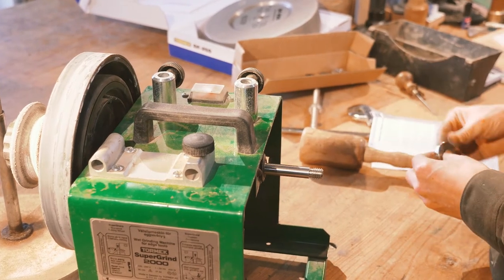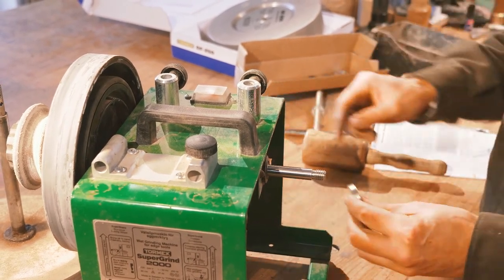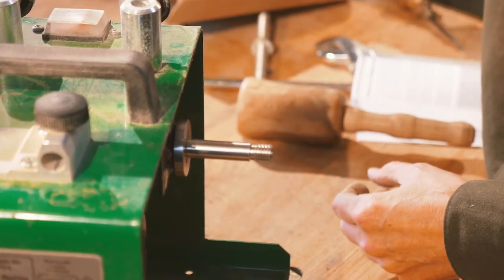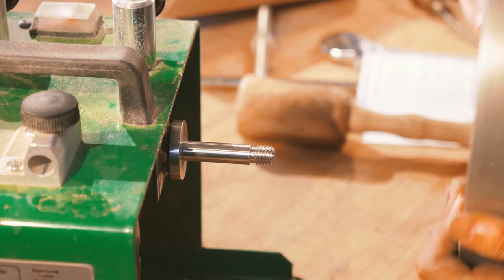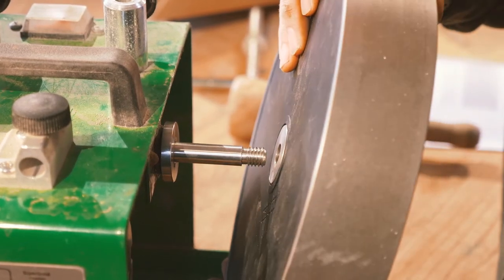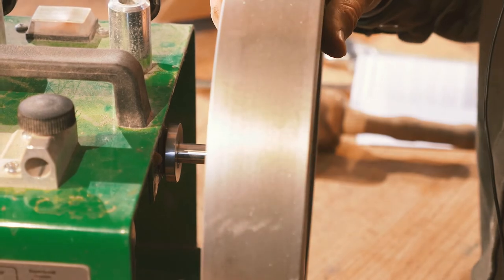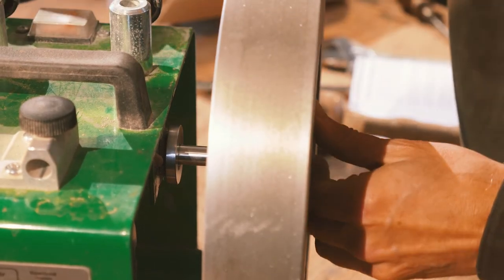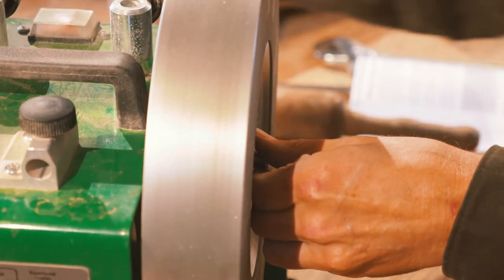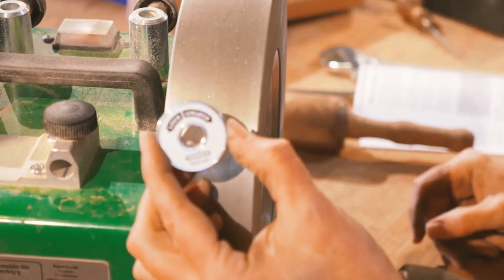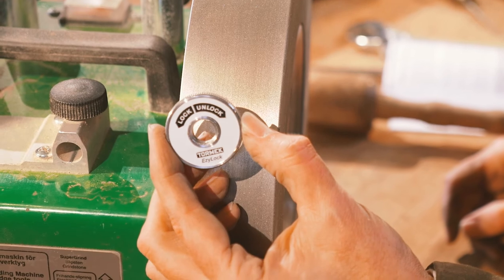And we have the spacer washer. And the diamond wheel itself. Gosh, this is quite a substantial weight to it. There we are. Now, this is one of the lovely new innovations from Tormek, which is the easy lock nut. And it has arrows on it so you can see which way you're supposed to turn it.